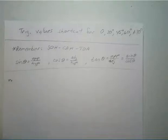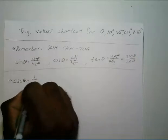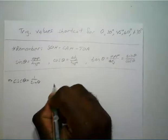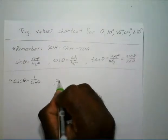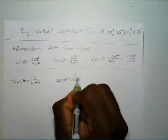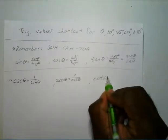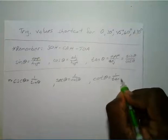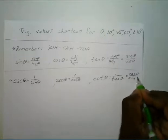Now starting from there we can go to our other three trig functions. Cosecant of theta is one over sine theta. Secant is just the reciprocal of cosine, and cotangent is just the reciprocal of tangent — or it can also be written as cosine over sine.